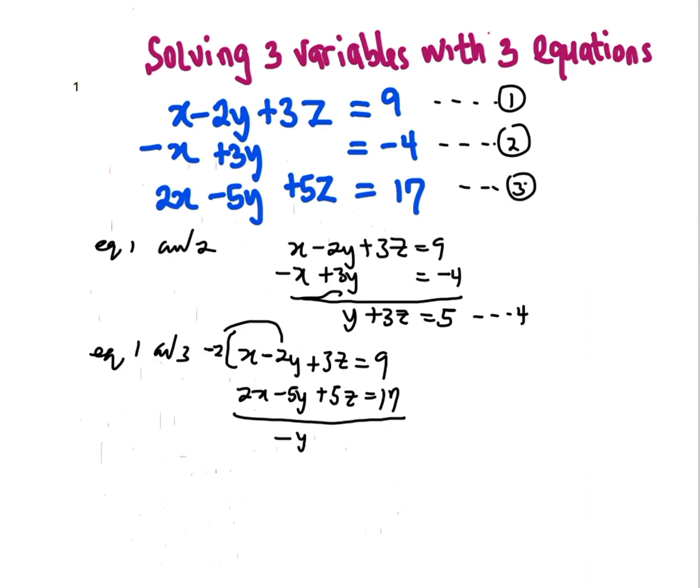Also, negative 2 multiplying 3z is going to be negative 6z plus 5z, which is going to be negative z. Negative 2 multiplying 9 is going to be negative 18 plus 17, which is negative 1. We can name this equation 5.